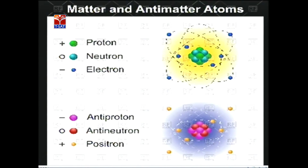Matter and antimatter are the same but in opposite charge. If we take hydrogen, it will have protons and electrons. In antimatter, that proton will become an anti-proton and that electron will become a positron. Many experiments have been going on since the 1920s when it was theorized by Dirac. But in November 2015, scientists said that this antimatter is exactly behaving like matter.